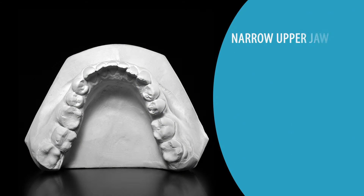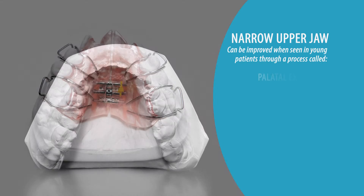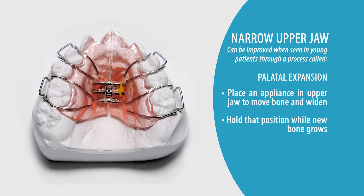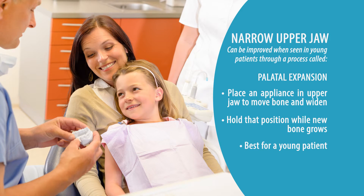One fairly common issue is that we may see an individual whose upper jaw is very narrow. When we see this with young patients, we can improve upon that by doing a process called palatal expansion — placing an appliance that actually moves the bones of the upper jaw apart and widens it. We then hold that position while new bone grows in the areas between the plates of bone in the upper jaw. This is best done for a young patient, maybe at the age of 8 to 10.